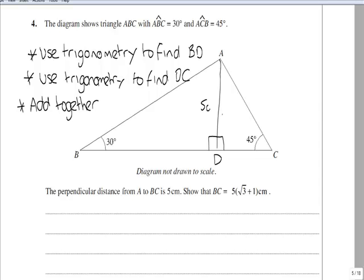So effectively what you are told to do is split your triangle into two right-angle triangles. We are then asked to show that BC has a length 5 brackets root 3 plus 1 cm.